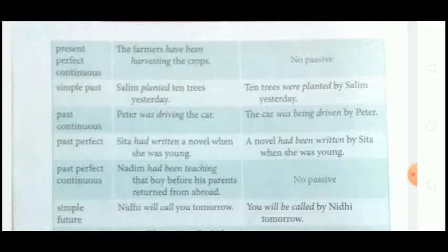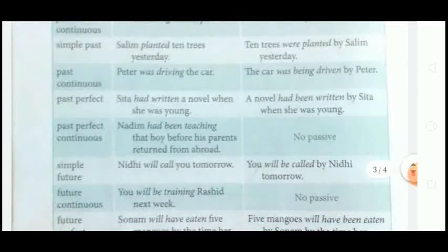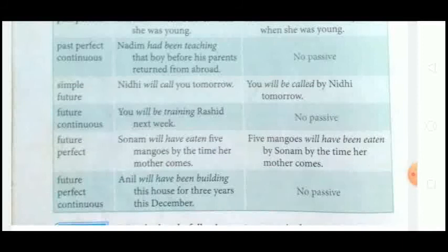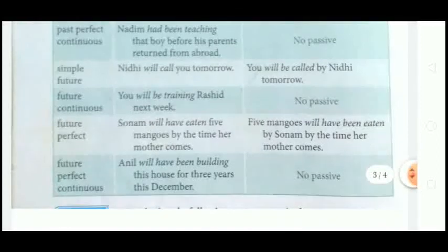Simple Past: Active — 'Salim planted 10 trees yesterday'; Passive — 'Ten trees were planted by Salim yesterday.' Past Continuous: Active — 'Peter was driving the car'; Passive — 'The car was being driven by Peter.' Past Perfect: Active — 'Sita had written a novel when she was young'; Passive — 'The novel had been written by Sita when she was young.' Past Perfect Continuous and Future Continuous use intransitive verbs here, so there are no passive sentences for those.